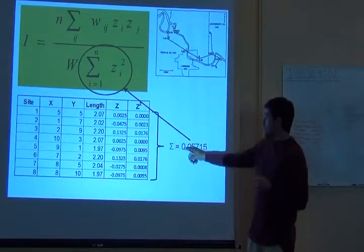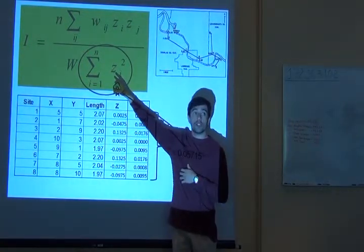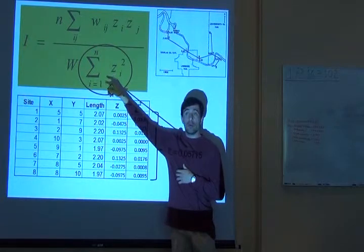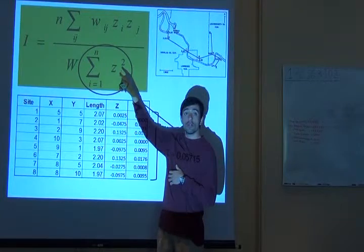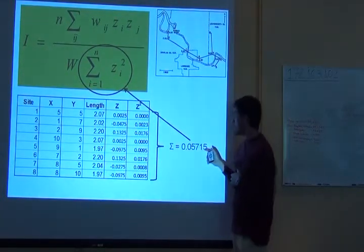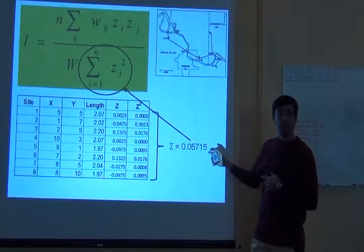It turns out that this number is the denominator. It's this part here. Remember that I told you we had to sum all z squared. It's this thing here. Pretty easy, right?